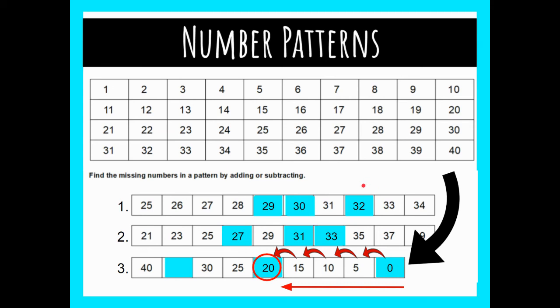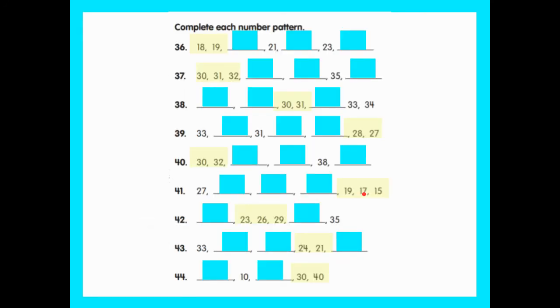I'm going to keep going backwards on this number pattern to solve for that last one on the end: 20, 25, 30, 35. You can go either way you want on the number line — I think counting forward is easier, so sometimes I like to go backwards on my patterns, but I just need to figure out which direction the pattern is going and make sure I'm consistent with that.